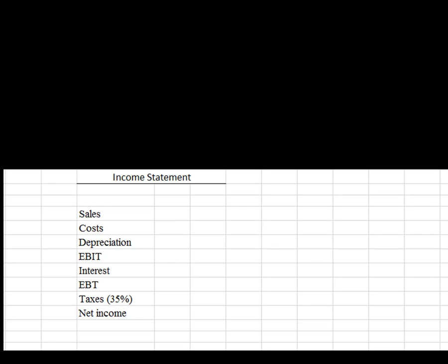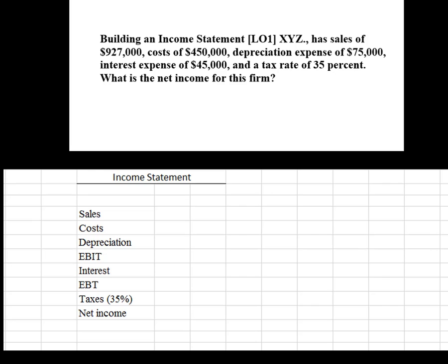I've created an Excel spreadsheet with a very simplified income statement. This income statement has sales, cost, depreciation, and earnings before interest and taxes — I call it EBIT. Other people might call it something different. Then you have interest, EBT or earnings before taxes, your taxes, and then your net income. We are trying to solve the problem for the net income.